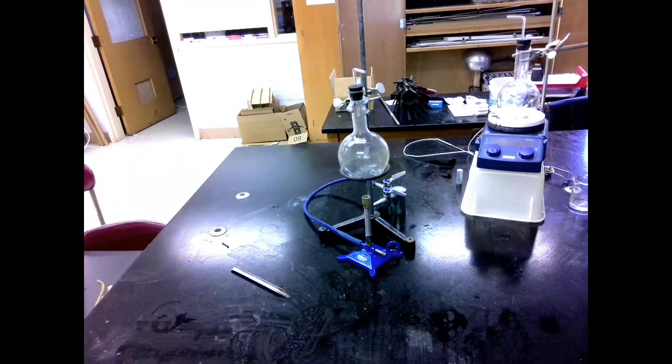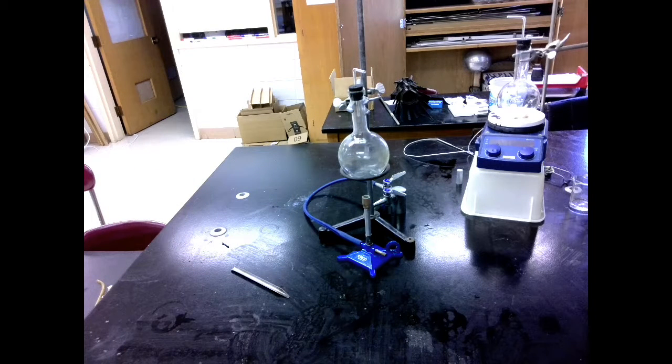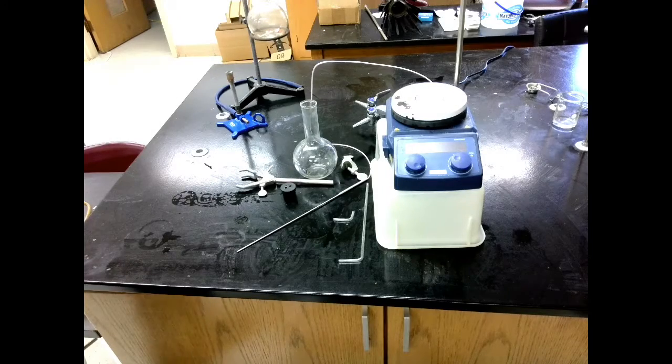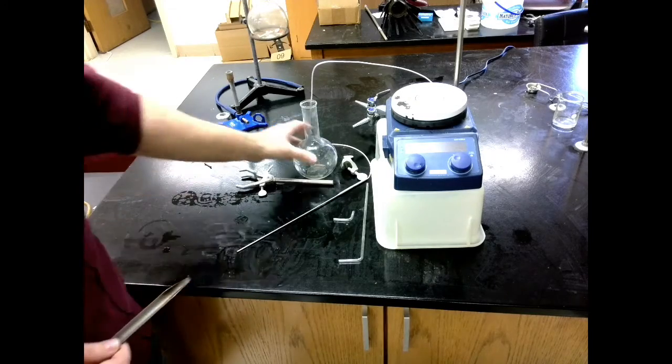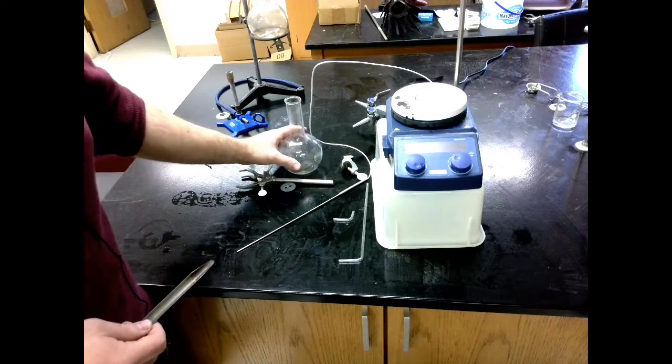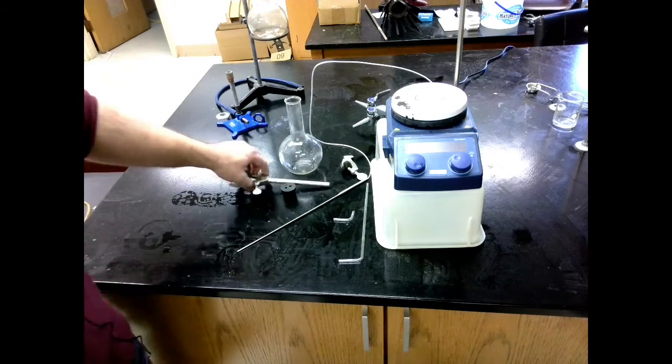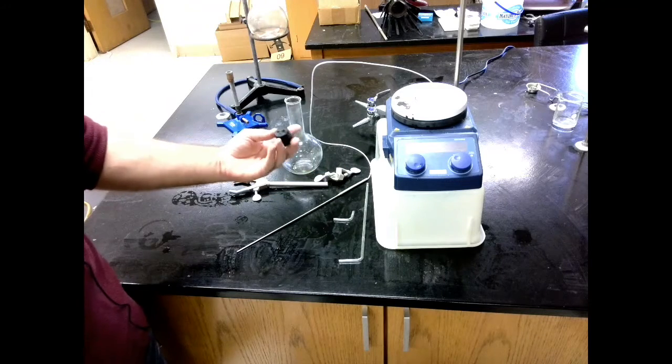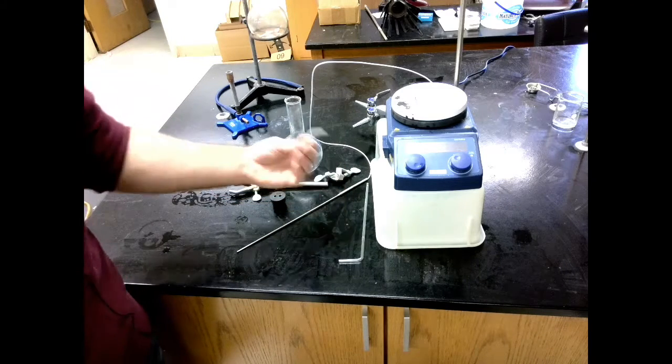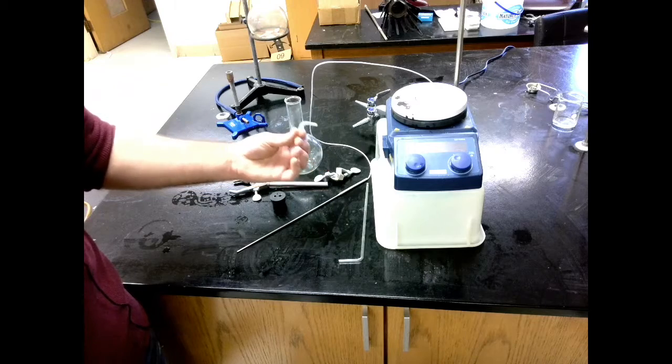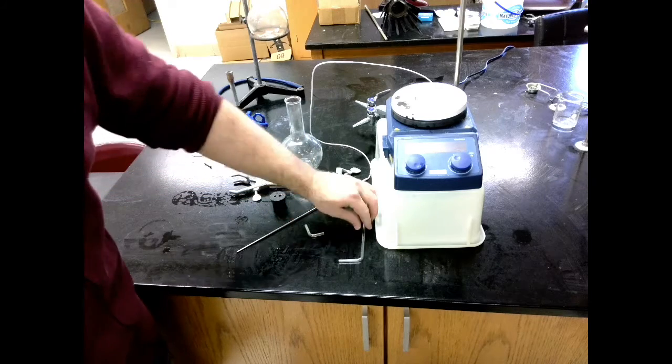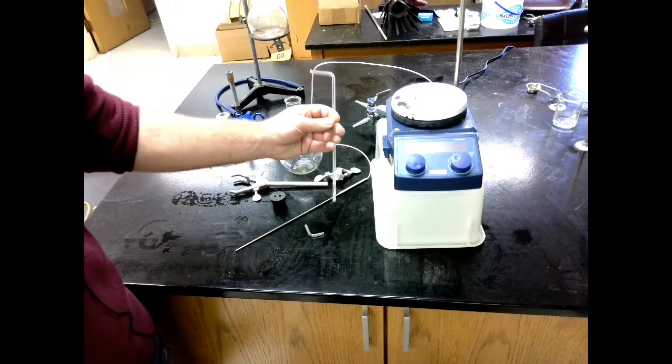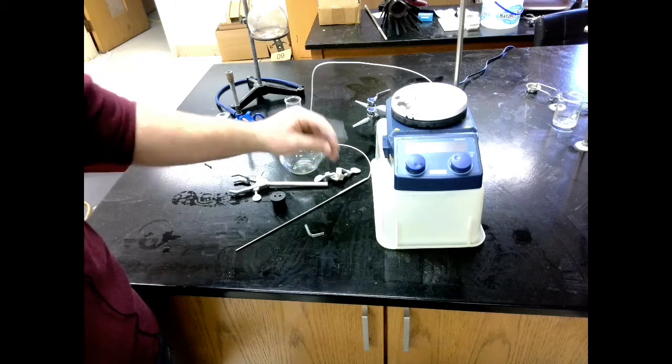Let's look at the Florence flask that will be containing our organic material. Here's our setup. We're going to need another Florence flask, another clamp, another clamp holder, another rubber stopper, another L-shaped tube that should be shorter, and a nice long glass tube. We'll look at how this should be placed in just a moment. We'll also need our hot plate.